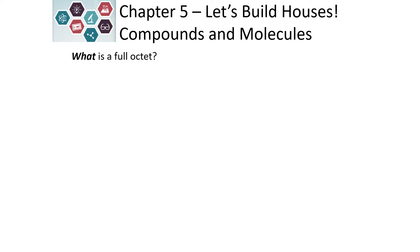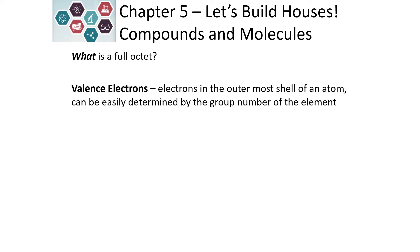So why do compounds and molecules form? All of our atoms have something called valence electrons — those are the electrons in the outermost shell or outermost orbital of the atom, and they can easily be figured out by the group number of the element. If it is in column one it has one valence electron; column two, two valence electrons. Over on the other side, column 18 has eight valence electrons, and column 17 (sometimes labeled column 7) has seven valence electrons.